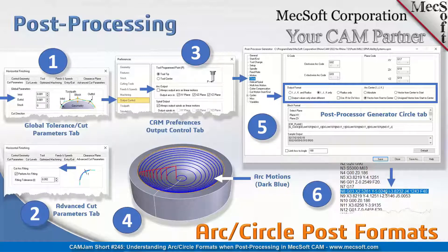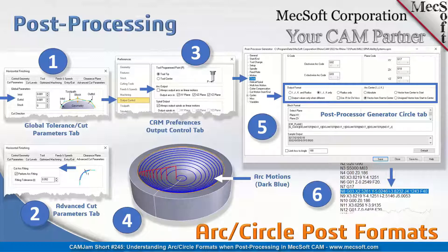This is an example of an arc formatted out: a G03 with X, Y, I, and J — no R value, so it's IJK only. If you need IJK and radius, or radius only, you can select those options. You need to look at your machine controller manual. If you don't understand the manual, call your machine vendor or manufacturer and ask for detailed instructions on outputting arcs. Once you find the proper format, make that adjustment in your post. If you're still unsure, send us the information from your machine tool vendor and we'll make the appropriate adjustments and send you a post to test.